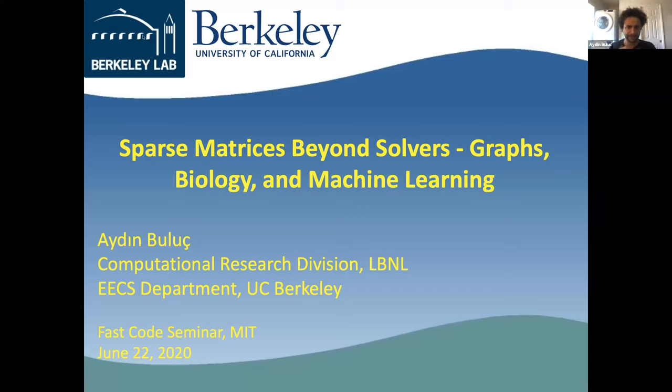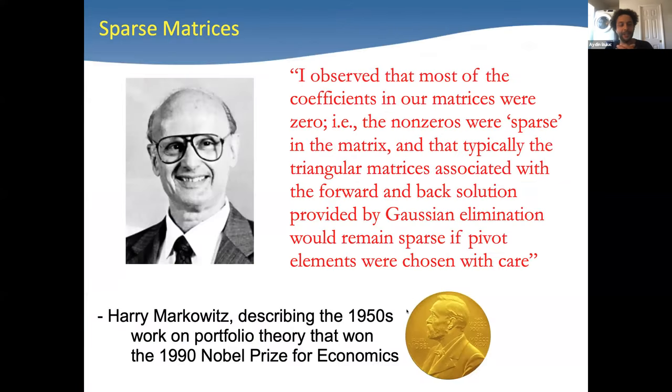One of the earliest codes about sparse matrices is due to Harry Markowitz, a Nobel laureate. He basically says if you solve a system of linear equations, if you're clever, you can actually keep things sparse. This is work from the 1950s. Can we use the same technology for other problems?